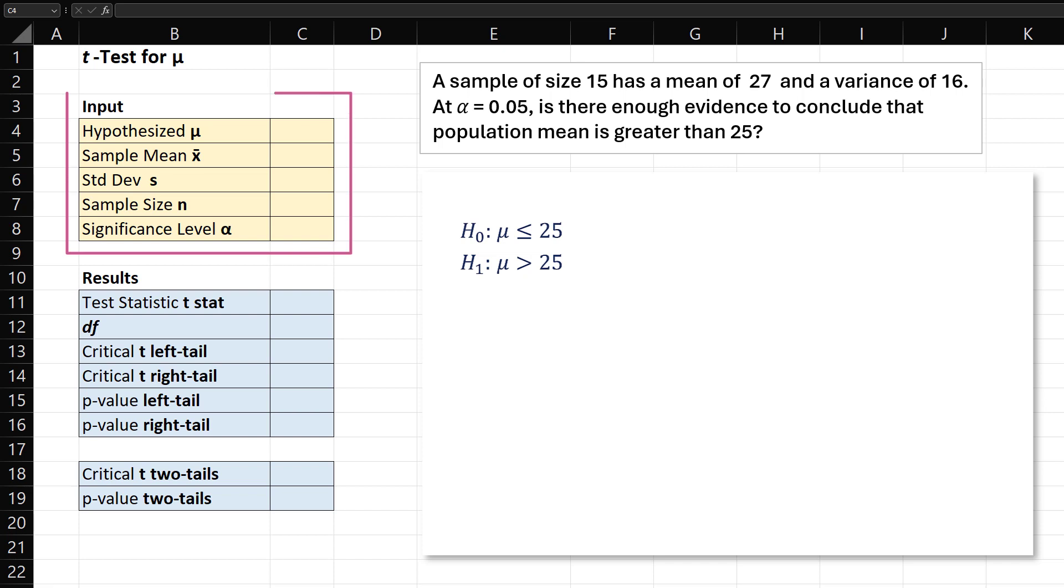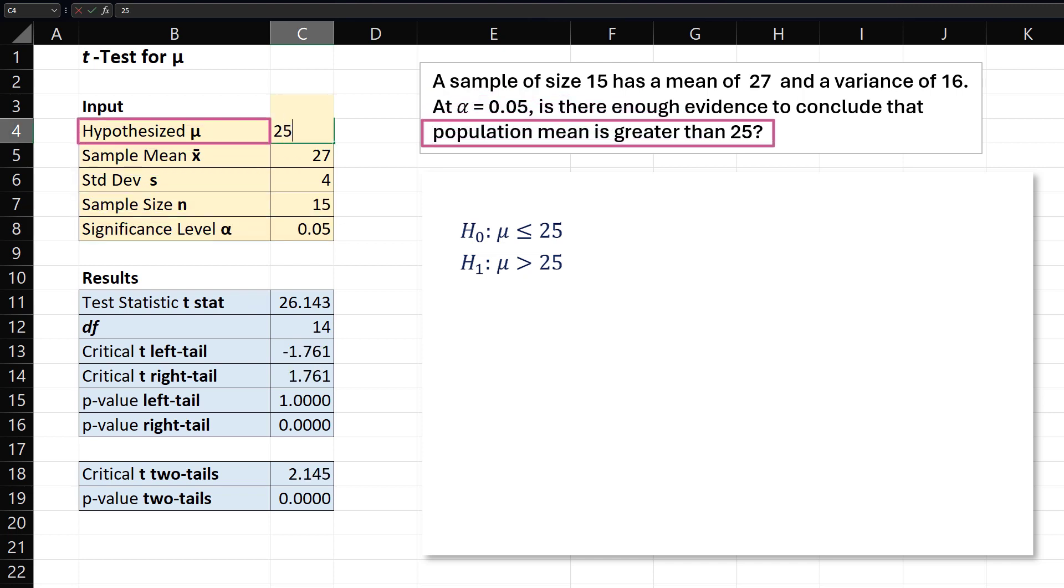Now let's input the values. The sample size n is 15 and the sample mean is 27. We're given the variance of the sample as 16 here. So for the standard deviation, we can input equals square root of 16. The significance level alpha is 0.05 and the hypothesized mean is 25.